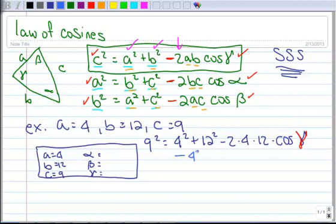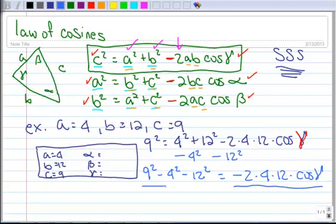All right, so I'm going to subtract 4² and 12² simultaneously from both sides. So I have 9² minus 4² minus 12². And this equals minus 2 times 4 times 12 times cosine gamma. And now I want to divide both sides by minus 2 times 4 times 12.